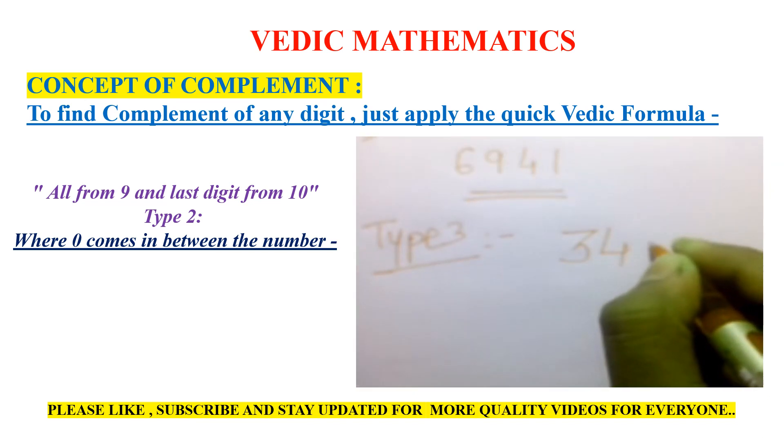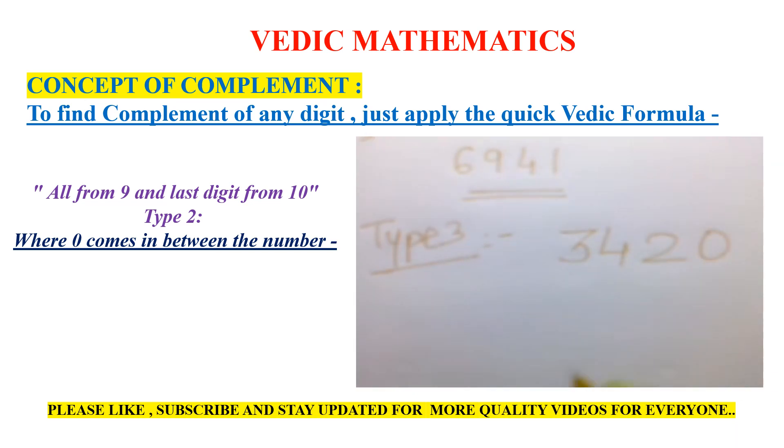In this case, we write that zero as-is in the complement. So the complement—you write it as-is. And the last non-zero number, that is 2, would be there. So we subtract that 2 from 10.